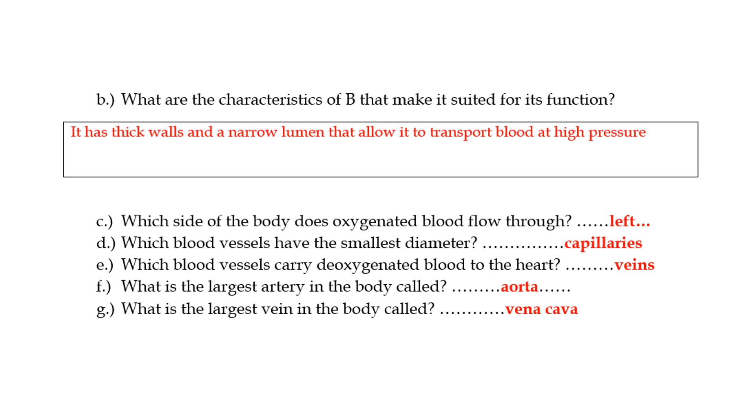Some quick fire questions. Which side of the body does oxygenated blood flow through? It's on the left side because remember the left side of the heart is where the aorta is and the aorta is the largest artery in the body. It transports oxygenated blood out of the heart. Always remember that arteries carry blood away from the heart and veins carry blood towards the heart. So the blood leaving the heart flows through the left side of the body and the blood returning to the heart will go through the right side.